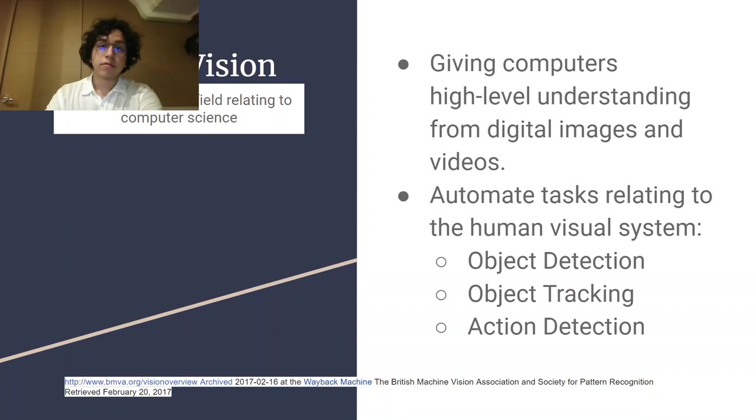To start with, I'd like to define what computer vision is. Despite its unique name, computer vision is an interdisciplinary science field relating to computer science. It aims to give computers high-level understanding from digital images and videos that humans may infer, and to automate tasks relating to the human visual system, such as object detection, object tracking, and action detection.